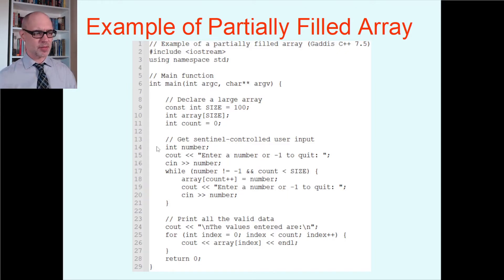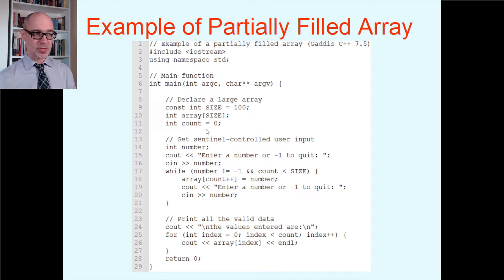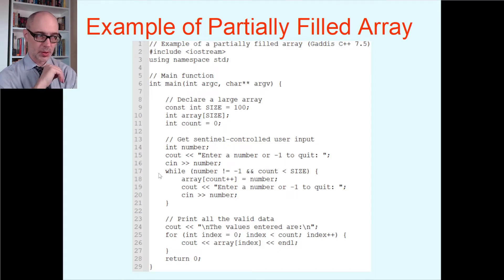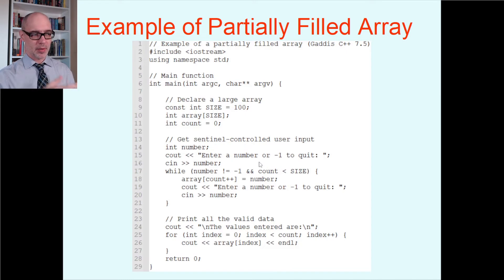Here's an example of a partially filled array. We're declaring a big integer array of size 100 because I don't know how much data the user needs. There's a counter variable to keep track of how much data the user actually entered. For the input part, we're not using a for loop — that's a count-controlled loop for when you know how much stuff is happening. Instead we use a sentinel-controlled while loop, asking the user to enter some number or negative one to quit. We keep looping while the number is not equal to negative one, also checking that count is less than 100.